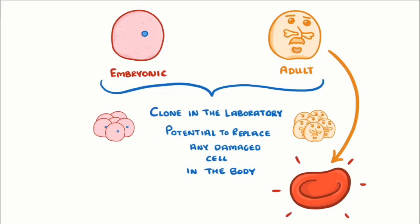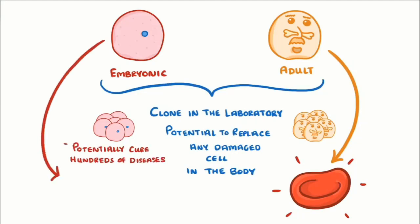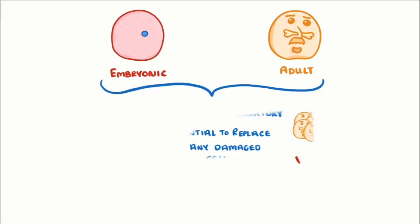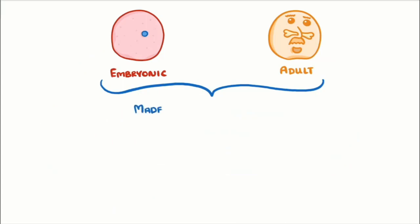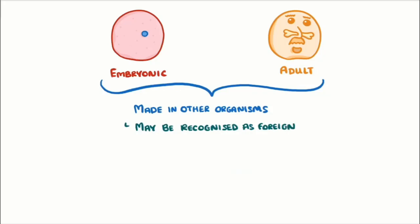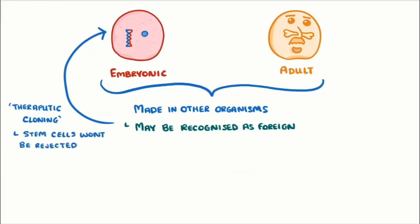Adult stem cells are limited to fixing diseases of blood cells since that is all they can differentiate into. We could do the same with embryonic stem cells, which could potentially cure hundreds of diseases — for example, by replacing nerve cells of paralyzed people or the insulin-producing cells in people with diabetes. One problem is that the patient's body may recognize the stem cells as foreign and try to destroy them. One way to overcome this is therapeutic cloning — making an embryo with the same genetic material as the patient, so any stem cells taken from that embryo would not be rejected.